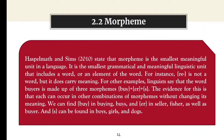Morpheme. Palmer and Siem state that morpheme is the smallest meaningful unit in a language. It is the smallest grammatical and meaningful linguistic unit that includes a word or an element of the word. For instance, 'race' isn't a word, but it does carry meaning. For another example, linguists say that the word 'buyers' is made up of three morphemes: buy, er, and s. The evidence for this is that it can occur in other combinations of morphemes without changing its meaning. We can find 'buy' in buying, 'buys', and 'er' in seller, fisher.